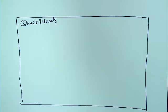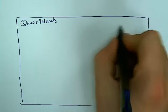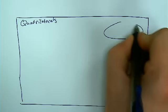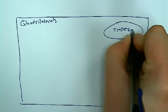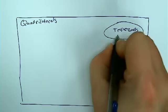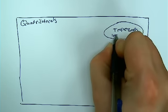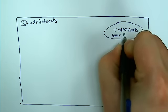Now within the quadrilateral group, we said we had three subgroups. We had trapezoids, which were over by themselves. And we said that was having one pair of parallel sides.